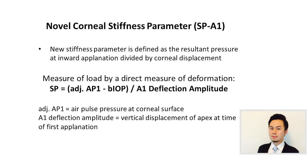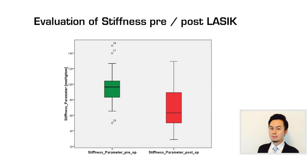There is another novel parameter of the Corvis called the stiffness parameter. It is defined as the resultant pressure at the first applanation divided by the corneal displacement, and it incorporates the bIOP. From this graph, the stiffness parameter actually decreases after LASIK, which makes sense because LASIK weakens the cornea, so the stiffness drops.